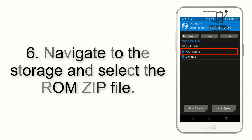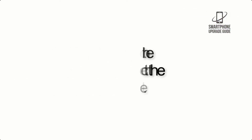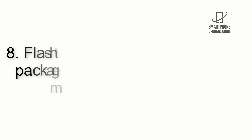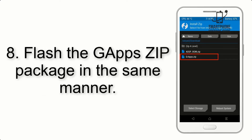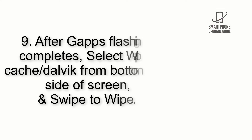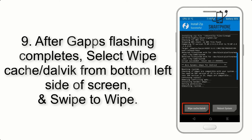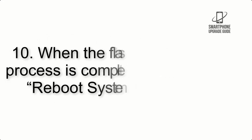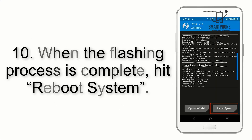Step 5: Go back to the recovery main screen and tap on the Install button. Step 6: Navigate to the storage and select the ROM zip file. Step 7: Swipe the button on the screen to install the ROM file. Step 8: Flash the GApps zip package in the same manner. Step 9: After GApps flashing completes, select Wipe Cache and Dalvik from the bottom left side of the screen and swipe to wipe.